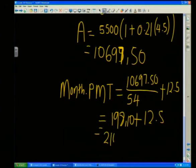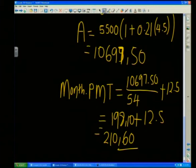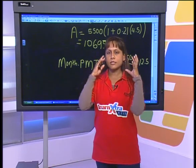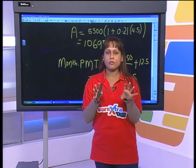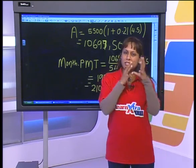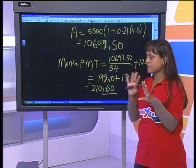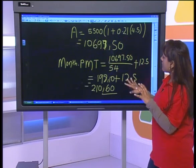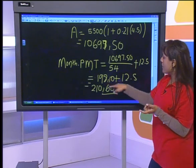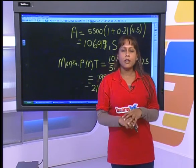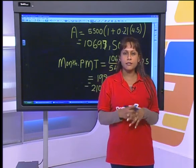So she ends up paying R210.60 every month. That monthly insurance premium clearly increases her payment. Remember: when they mention insurance premiums, do not include them in the principal amount. Work out your monthly payment first by dividing the accumulated amount by the number of months, and only then add the insurance premium at the end. Don't do anything strange like adding R12.50 into the principal — add it only at the very end.